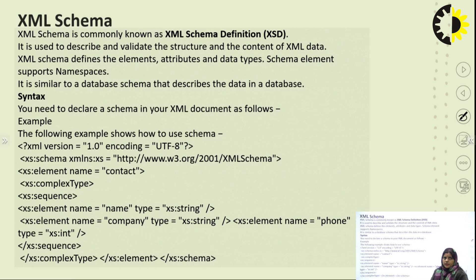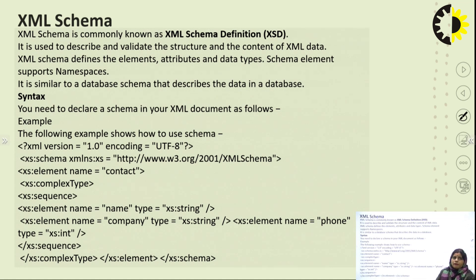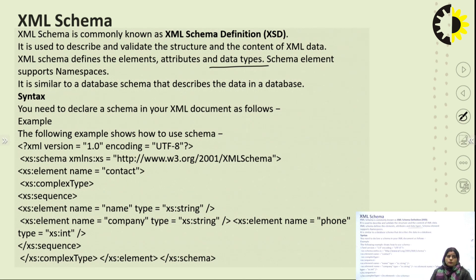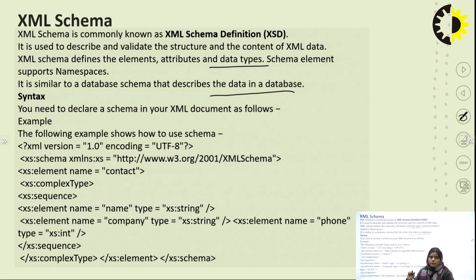The next part is XML Schema. XML Schema is basically a validation of XML data. The XML Schema Definition is used to describe and validate structures. It defines entities, attributes, and data types. Schema elements also support namespaces. It is similar to a database schema in DBMS — XML Schema describes data in a structure similar to a database schema.